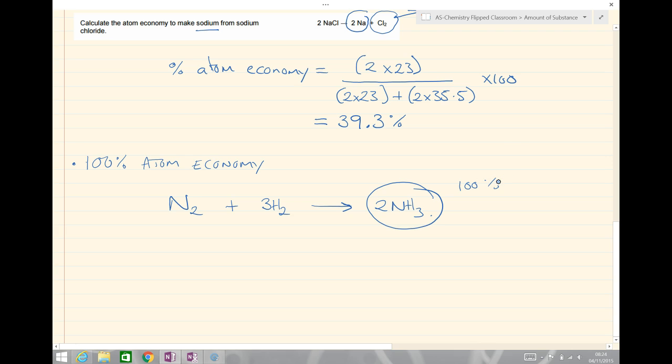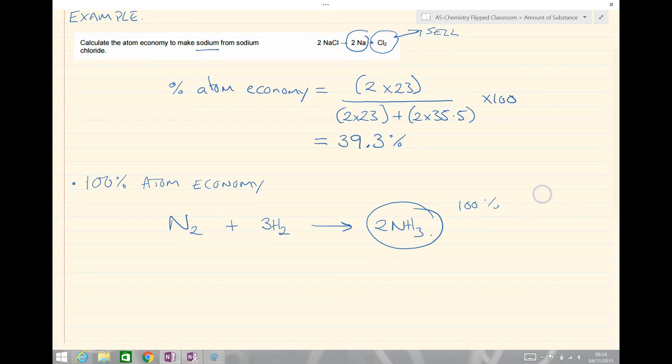So our two ways of improving atom economy are: one, we can either find a use for our second product, or perhaps another way would be to find a suitable reaction pathway to ensure that we only have one product in the final mixture, ensuring we have 100% atom economy. Both of those are perfectly good ways of improving the atom economy.